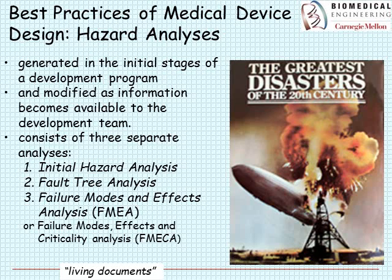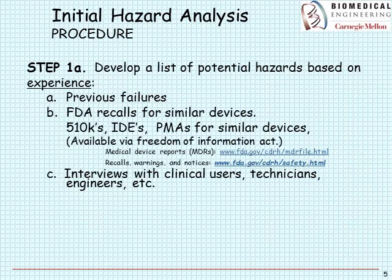The hazard analysis is generated from the very origins of an invention, in the initial stages of a development program. It has multiple stages and is modified as information becomes available. It consists of three separate analyses: an initial hazard analysis, a fault tree analysis, and a failure modes and effects analysis. A variation is called failure modes, effects and criticality analysis, or FMECA. I want to put inventive problem solving in the context of practical scenarios.